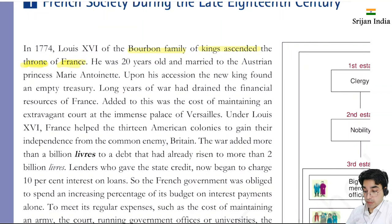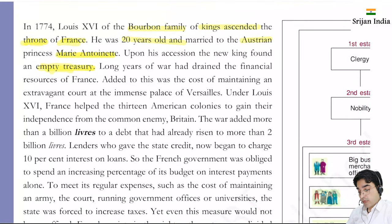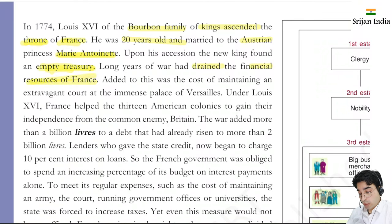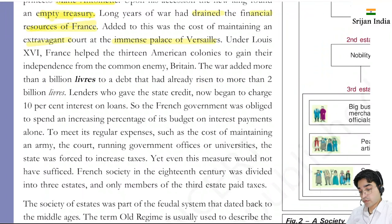Upon his accession, the new king found an empty treasury. Long years of war had drained the financial resources of France. Added to this was the cost of maintaining an extravagant court at the immense palace of Versailles. Their income was less but expenditure was high. Under Louis XVI, France helped the 13 American colonies to gain their independence from Britain, their common enemy.